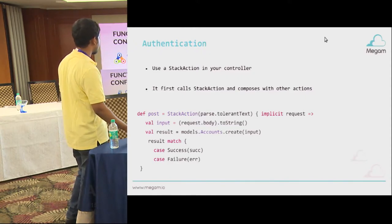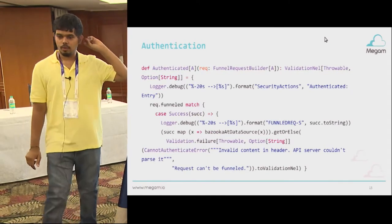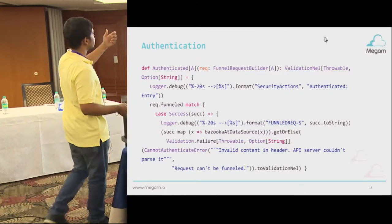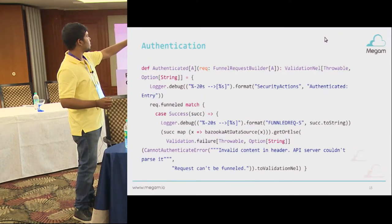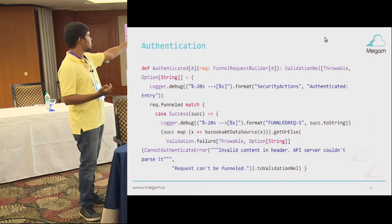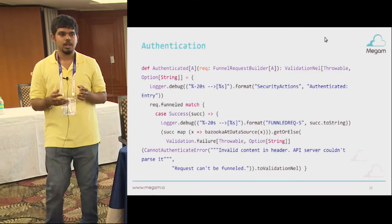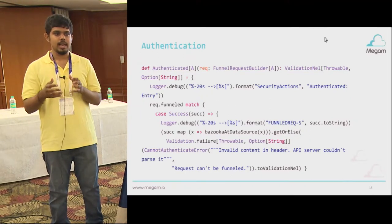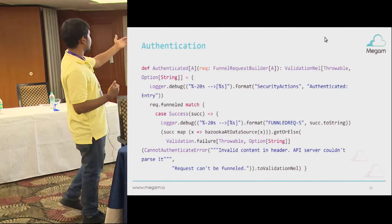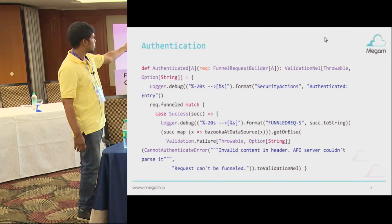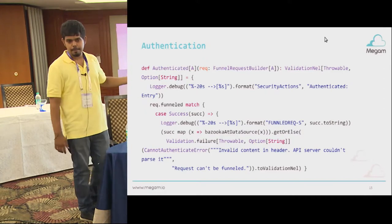It calls the model. This is what happens when you do auth action. We've overridden a method — the request comes in, we have an implicit function which actually builds a funnel request builder. It calls the authenticated function and this is where we've used ValidationNel. We use ValidationNel everywhere — anywhere we call, we get a ValidationNel, and we get a left map and a flat map. We either get a failure or a success. The request gets funneled, and if it's success it does checks in; if it's a failure, it throws a validation failure string.